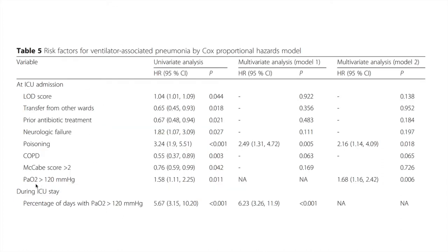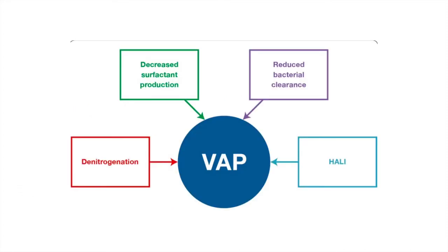Prolonged sustenance of PaO2 greater than 120 mmHg is a strong and significant risk factor for developing ventilator-associated pneumonia. Denitrogenation, decreased surfactant production, reduced bacterial clearance, and hyperoxia-associated acute lung injury all contribute to the development of VAP through hyperoxia.